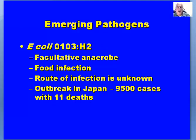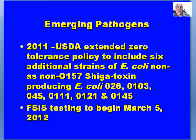The hemorrhagic E. coli O103:H2 was found in an outbreak in Japan with 9,500 cases and 11 deaths. In 2011, the USDA extended the zero tolerance policy to include six additional strains of non-O157 Shiga toxin-producing E. coli: O26, O103, O45, O111, O121, and O145. The FDA implemented this in March 2012 and continues to test for these other strains of E. coli.